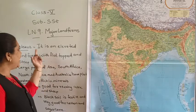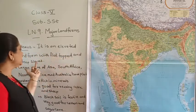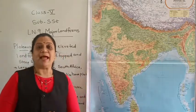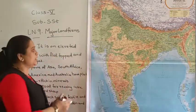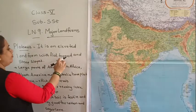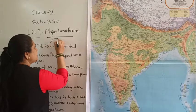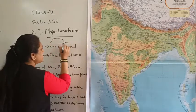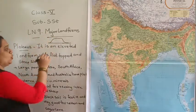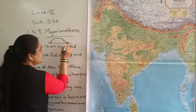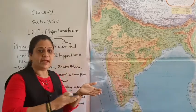Now what is plateau? Plateau is an elevated landform with a flat top and a steep slope. You have studied plateau in 4th standard in detail. It is elevated — not like a mountain — but it is an elevated landform with a flat top and a steep slope, and it is a little bit higher from the nearby area.